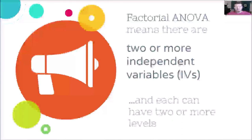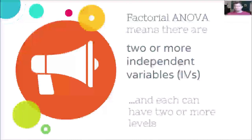In an independent samples t-test, you have one independent variable that takes two levels — only two groups. In a one-way ANOVA, you have one independent variable that takes two or more levels. In a factorial ANOVA, you can now have two or more independent variables, and each of those can take two or more levels. So the design can get much more complex. For example, I can simultaneously look at the effect of gender, which takes two levels — male and female — and ethnicity, which takes five levels. That's two variables, making it a factorial ANOVA.